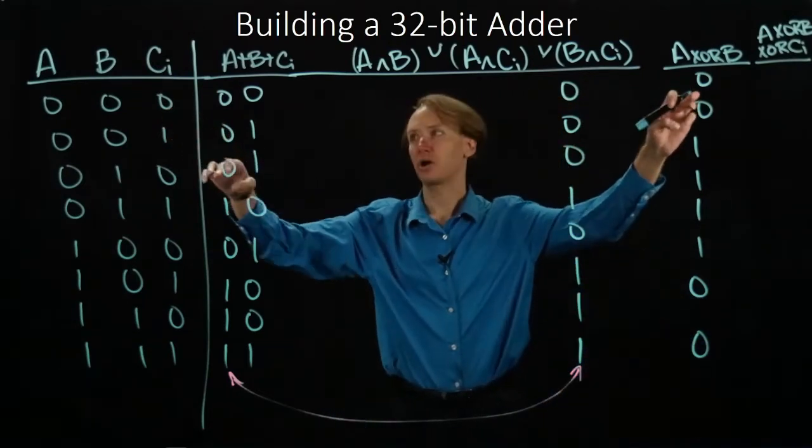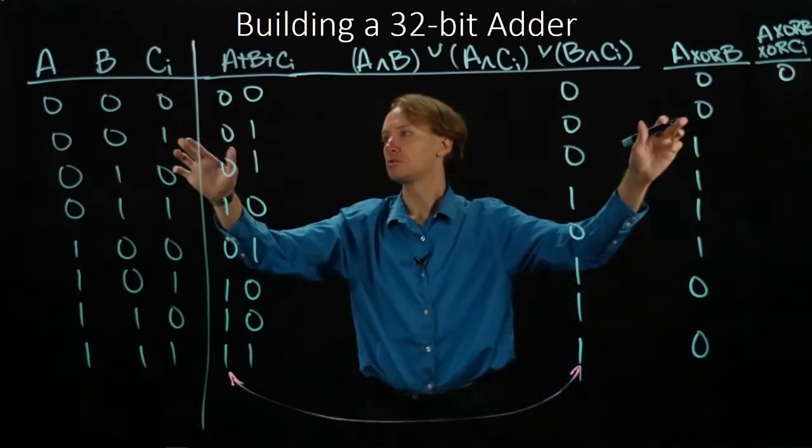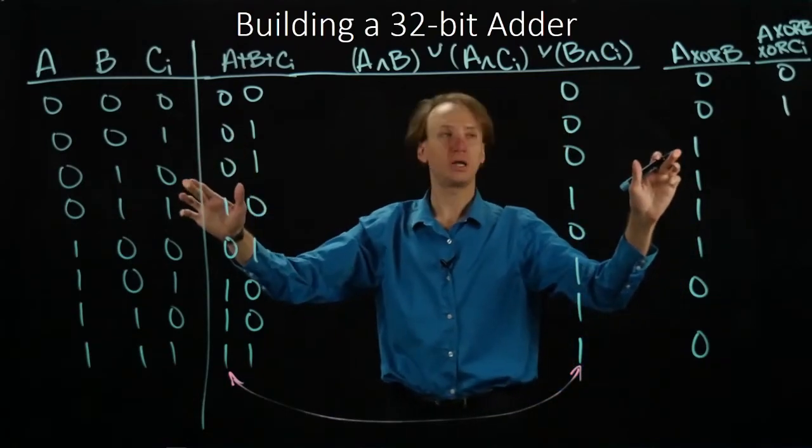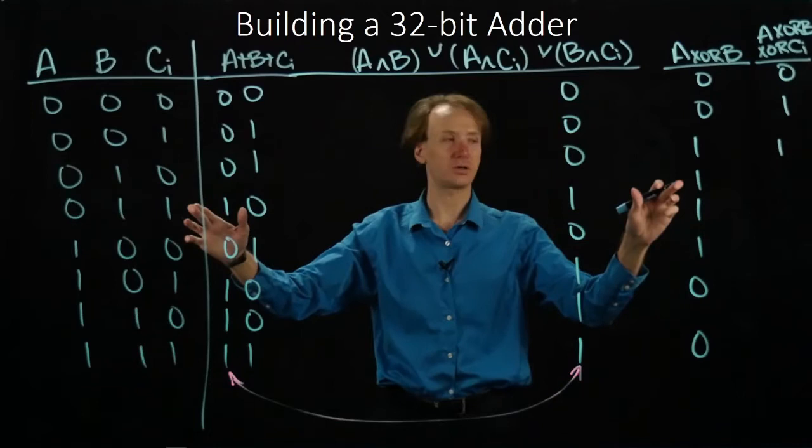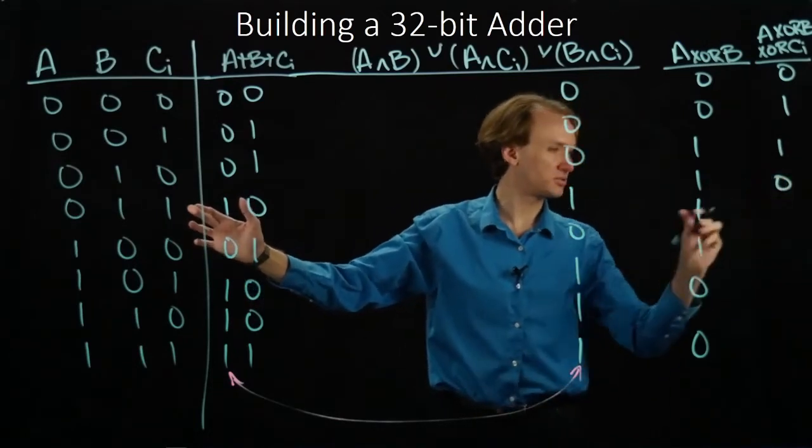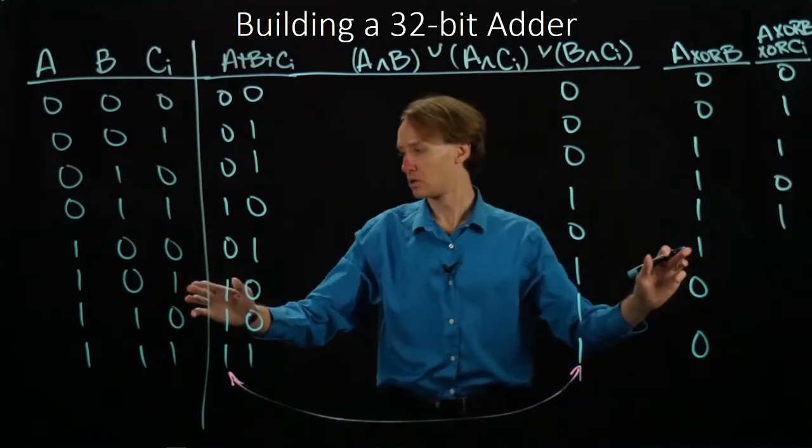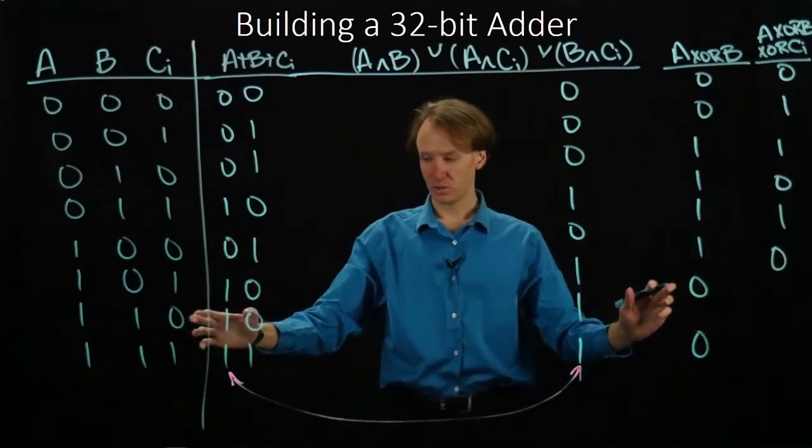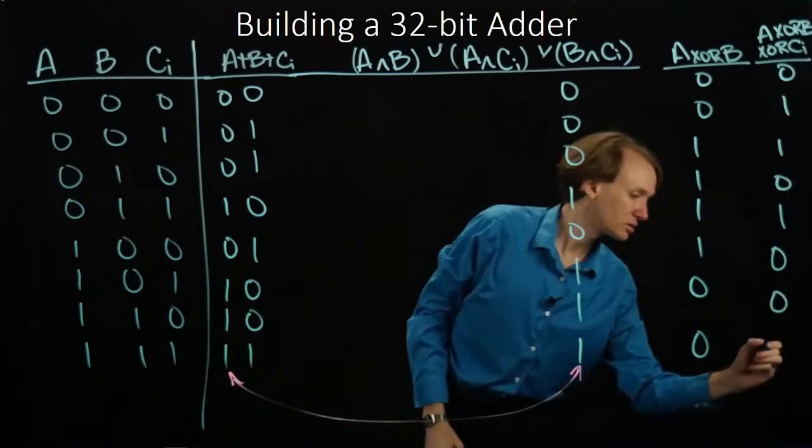So now I have 0 XOR 0 gives me 0. 0 XOR 1 gives me 1. 1 XOR 0 gives me 1. 1 XOR 1 gives me 0. 1 XOR 0 gives me 1. 1 XOR 1 gives me 0. 0 XOR 0 gives me 0. And 0 XOR 1 gives me 1.